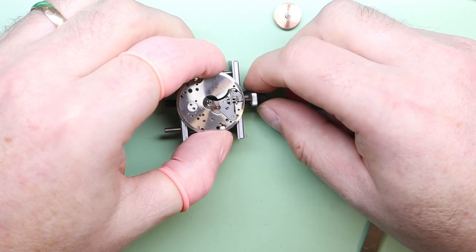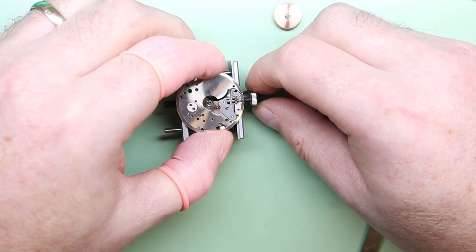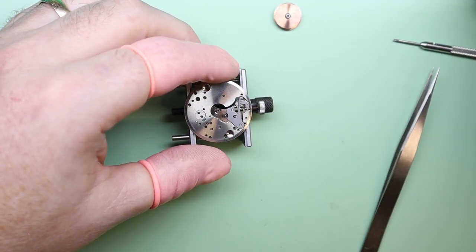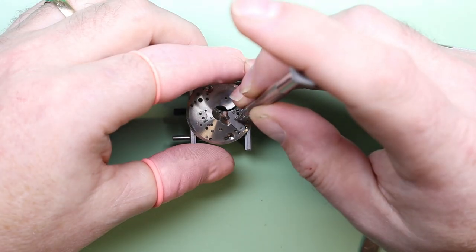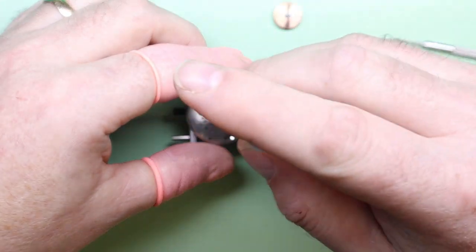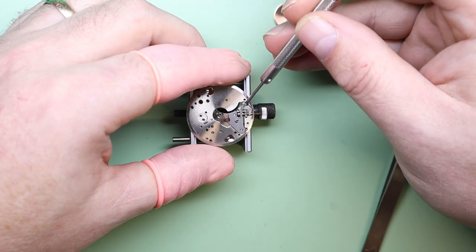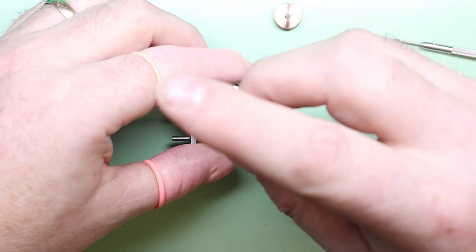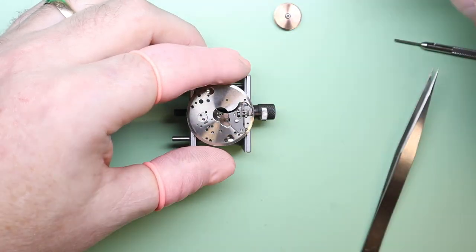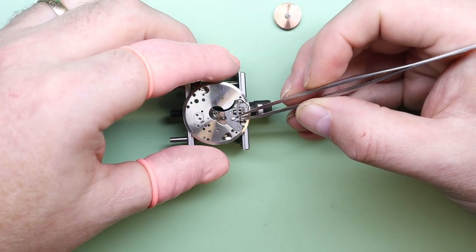We're refitting it to the main plate before putting it in the cleaner. So we loosen off the screw that's holding the setting lever spring, and we then fully remove the screw once we've removed the tension from that spring, otherwise it has a tendency to ping off into the distance.